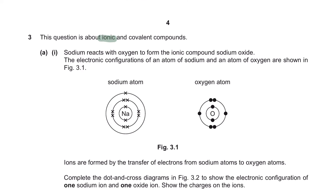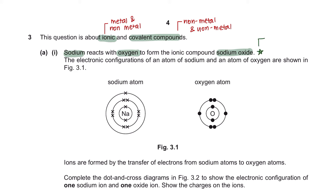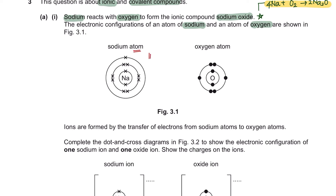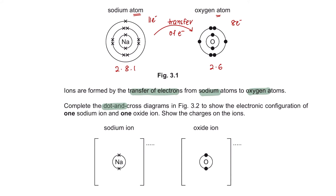Question 3 is about ionic and covalent compounds. Ionic compounds are formed by metals and non-metals; covalent compounds come from non-metal elements. Question 3A: sodium reacts with oxygen to form the ionic compound sodium oxide. The electron configuration of sodium is 2, 8, 1 (11 electrons), and oxygen is 2, 6 (8 electrons). Ions are formed by the transfer of electrons from sodium to oxygen atoms. Complete the dot and cross diagrams in figure 3.2 to show the electronic configuration of one sodium ion and one oxide ion, and show the charges on the ions.